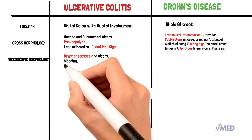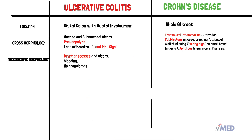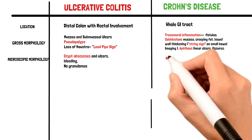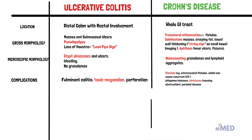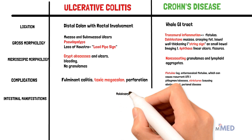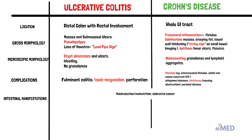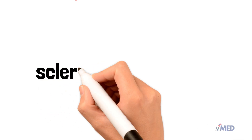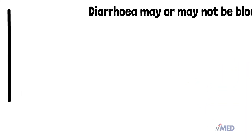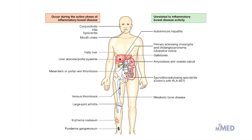Microscopically, UC shows crypt abscesses and ulcers but no granulomas, while Crohn's disease shows non-caseating granulomas and lymphoid aggregates. UC complications include fulminant colitis, toxic megacolon, and perforation; Crohn's complications include fistulas, strictures, obstruction, and perianal disease. Malabsorption, malnutrition, and colorectal cancer are common to both. UC presents with bloody diarrhea; CD may or may not. Primary sclerosing cholangitis is a special UC manifestation; kidney stones and gallstones are notable in CD. Rash, pyoderma gangrenosum, erythema nodosum, eye inflammation, and arthritis are common to both.